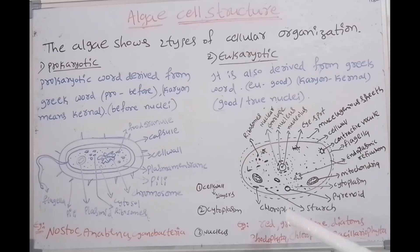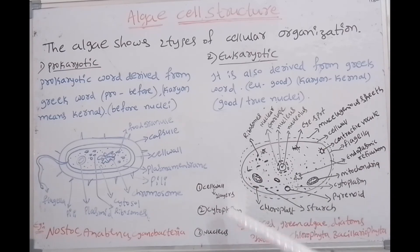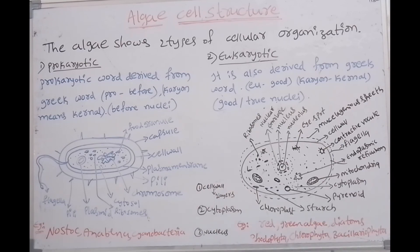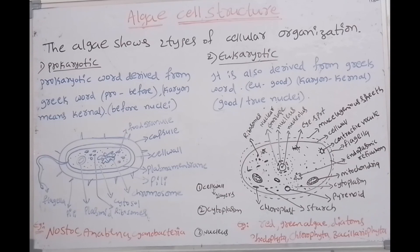The eukaryotic cell structure has 3 parts mainly: cell wall, cytoplasm, nucleus. The cell wall contains 2 layers: outer layer and inner layer. The inner layer is formed with cellulose, pectin, or mucilage. Sometimes, in red algae, CaCO3, iron, and silica are present in the cell wall of red algae.